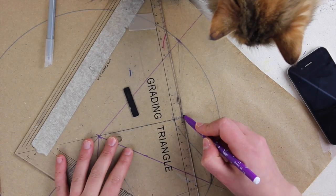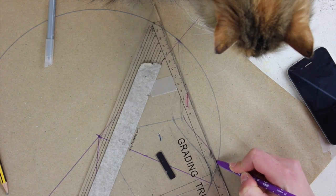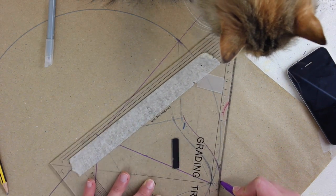And now we're going to add a 1cm seam allowance. So I'm using my grading triangle for that, but you can just use a ruler or anything that you have at hand is going to be fine.